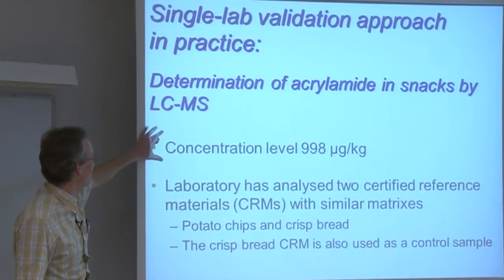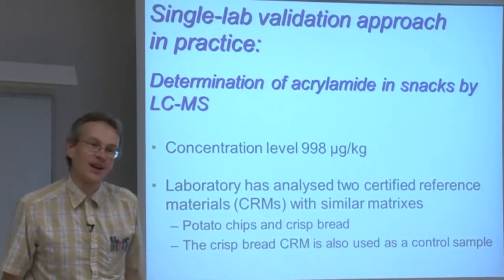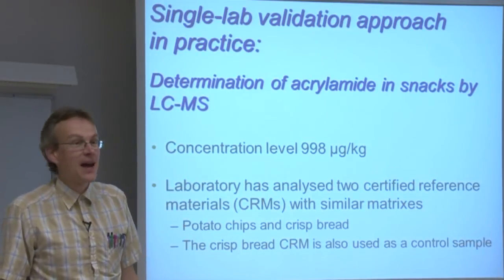As I said previously, in the single-lab validation approach the uncertainty is calculated for the procedure, for the analytical method, rather than for the particular result. What we will do now is also calculate it for the procedure and afterwards apply it to this result. The laboratory has found a concentration level of 998 micrograms per kilogram, and this is our result for which we will eventually assign the uncertainty.